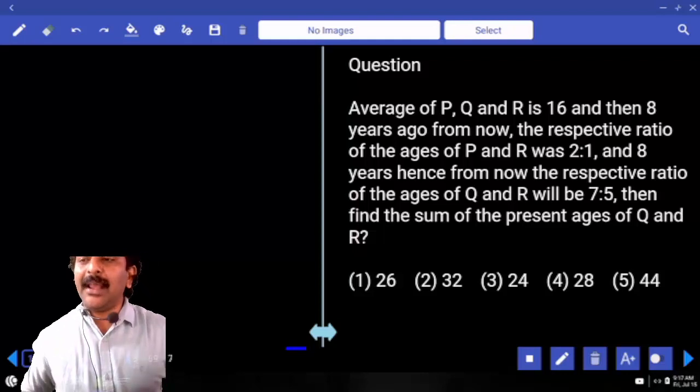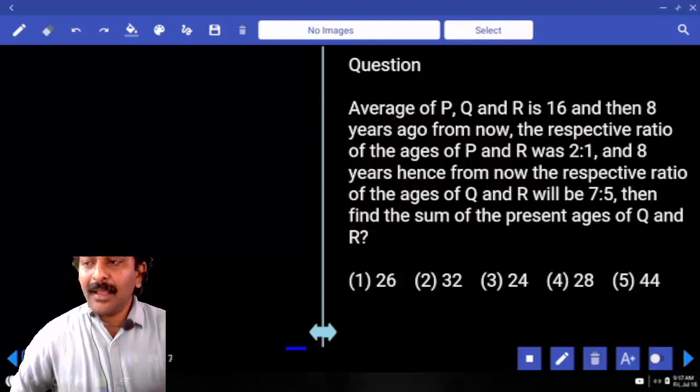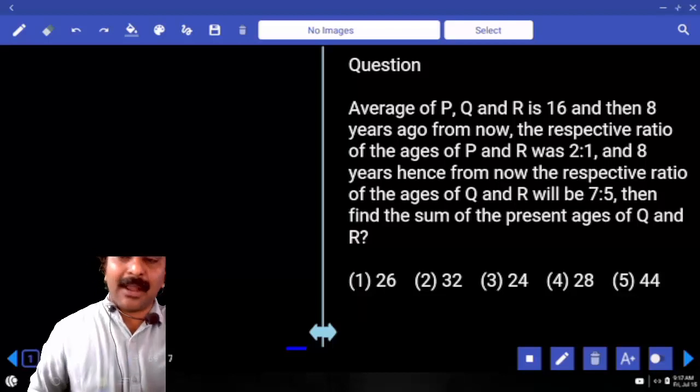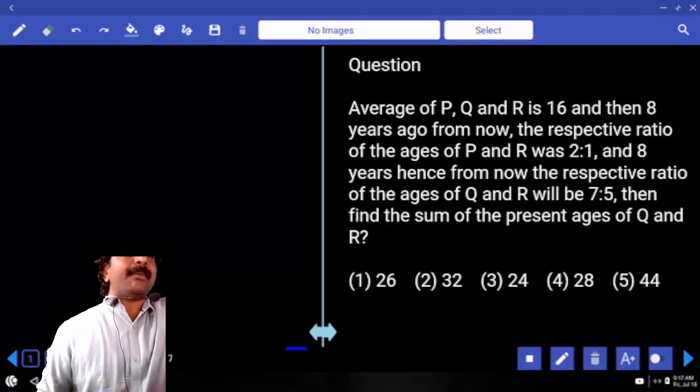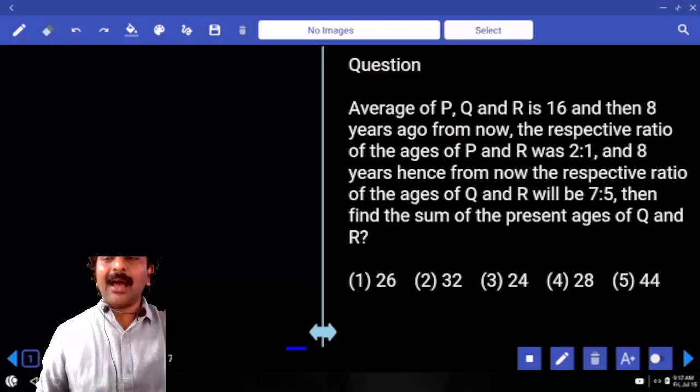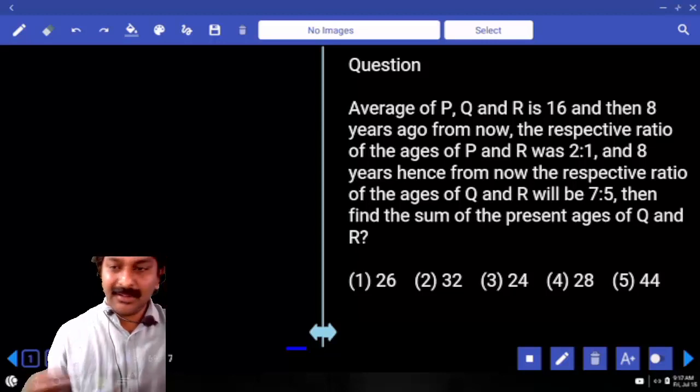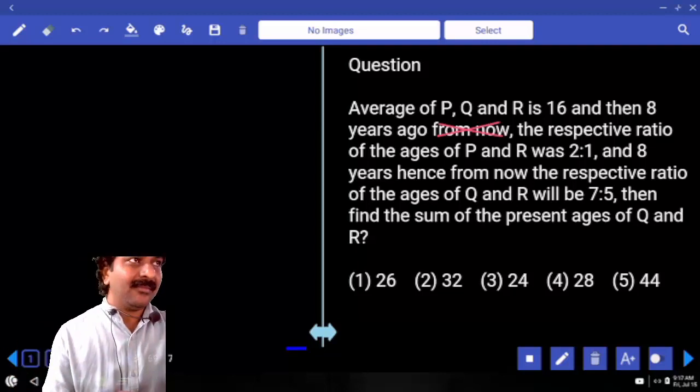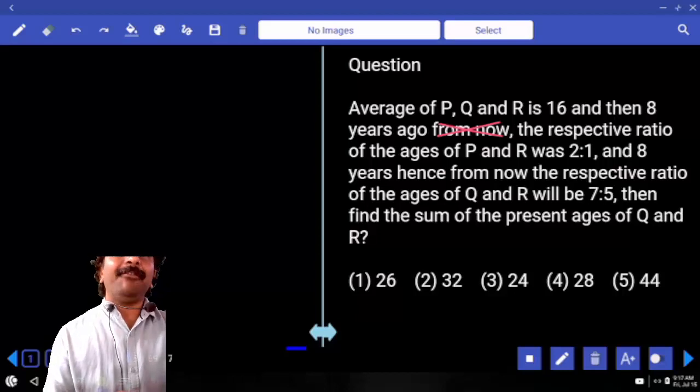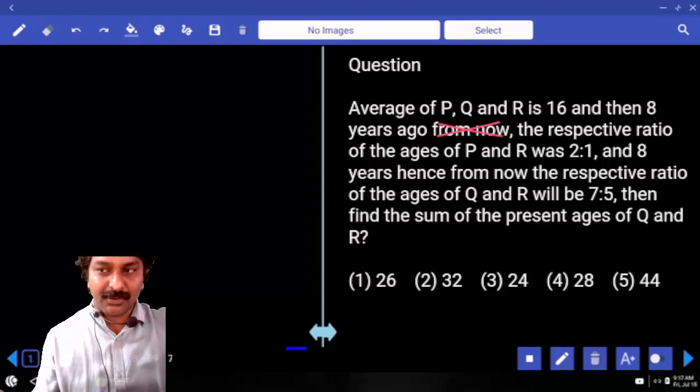The average of P, Q, and R is 16, and then 8 years ago from now. That means 8 years back. Now is the present. So don't get confused yourself - 8 years ago versus after 8 years from now.